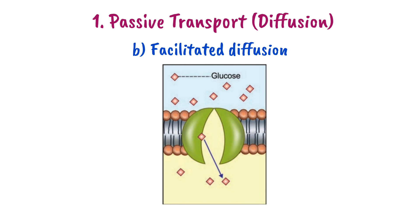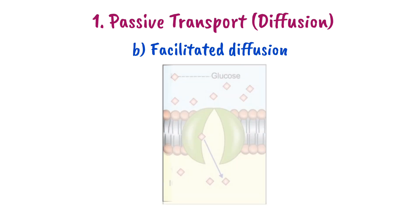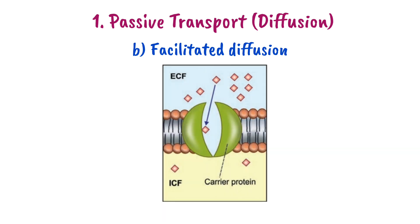You may be confused about how facilitated diffusion uses a carrier but not energy. The key point is: if a substance is moving from high concentration to low concentration, no energy needs to be supplied. The substance moves through the protein layer in the cell membrane automatically, without requiring ATP.